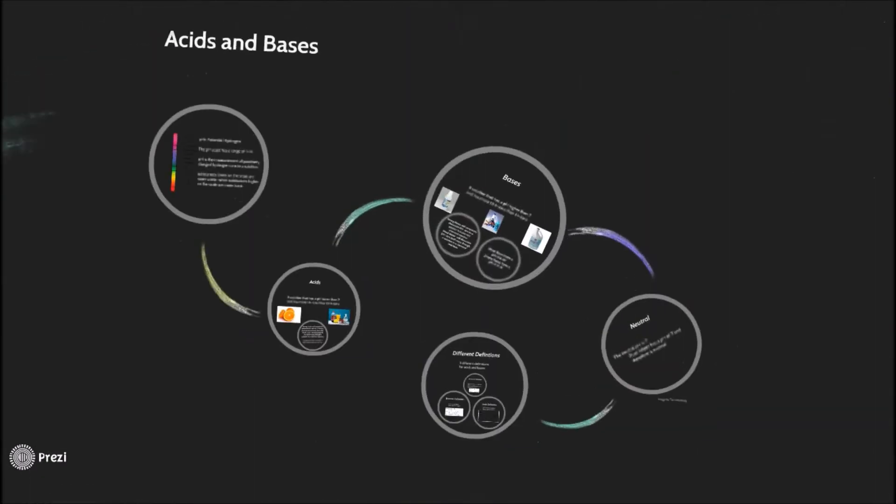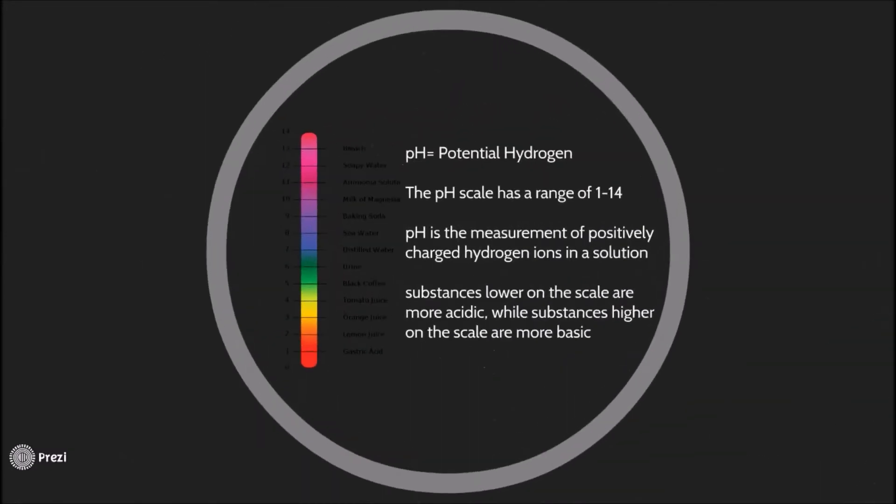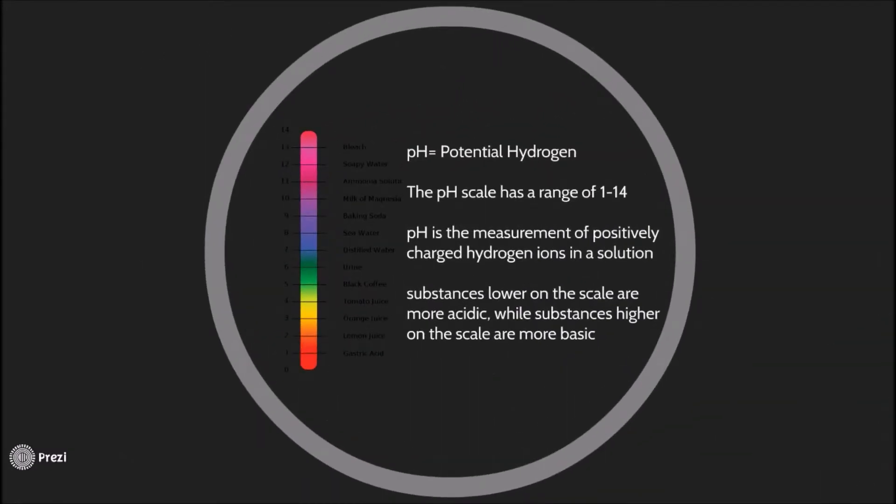Now we are going to move on to acids and bases. As you can see on the side, there is a scale. This is the pH scale. pH is potential hydrogen. The pH scale has a range from 1 to 14. pH is the measurement of positively charged hydrogen ions in a solution. Substances lower on the scale are more acidic, while substances higher on the scale are more basic.